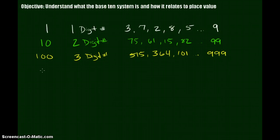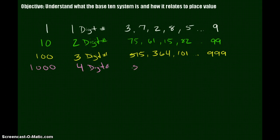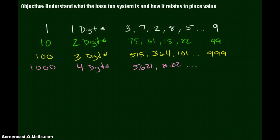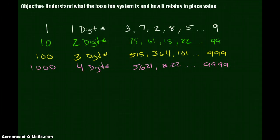One more after 999 gives us 1,000. 1,000 is our smallest four-digit number. Some other four-digit numbers are 5,621 and 8,212 — we put little commas in there, which we'll explain in a couple of videos. The largest four-digit number is 9,999.